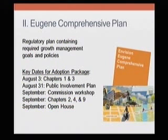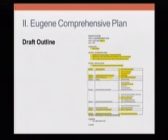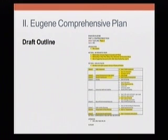Documents in your packet are: the comp plan outline, a table of contents, an introduction to the goals and policies, and drafts of chapters one and three. The outline gives a snapshot of what the plan looks like. The table of contents is a much lengthier document designed to show where different policy items will be addressed throughout the comprehensive plan.